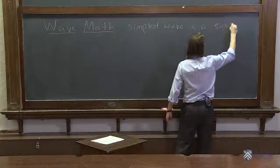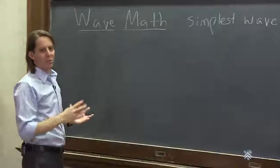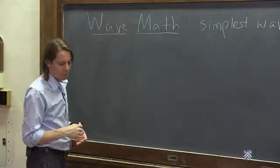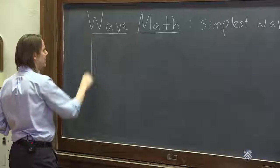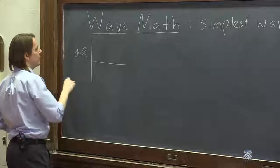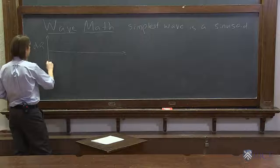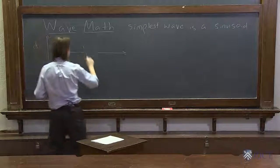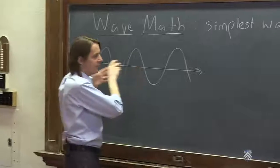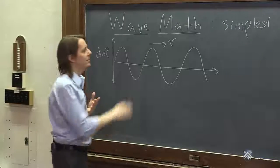The simplest wave is a sinusoid. You can have all kinds of pulse shapes moving down a string or through a medium, but for mathematical reasons the sinusoid is the simplest to deal with. So let's imagine this is the displacement of a string — I'll call it DISP — with the wave traveling along this axis. I'll draw a sinusoid like this, and that would be the shape of the string if you were to shake it really fast. That sinusoid would travel along with some speed v.